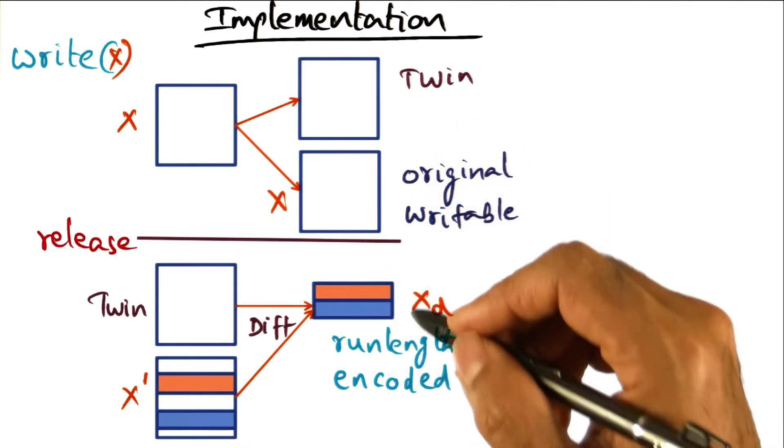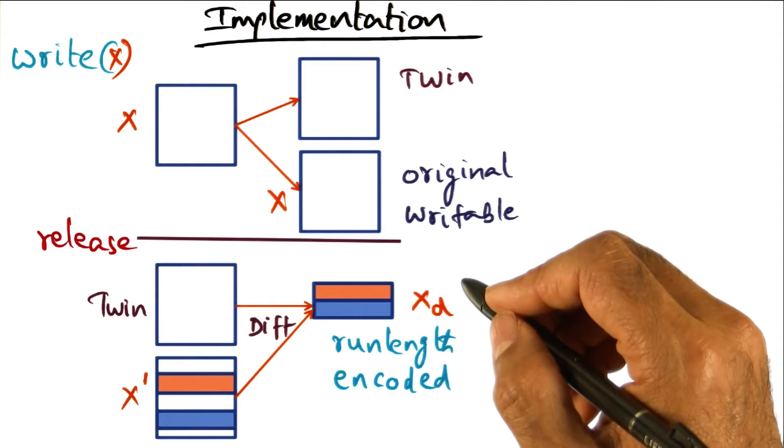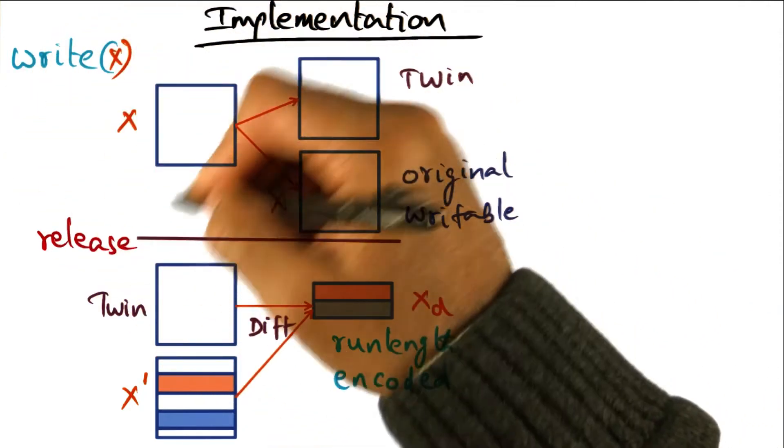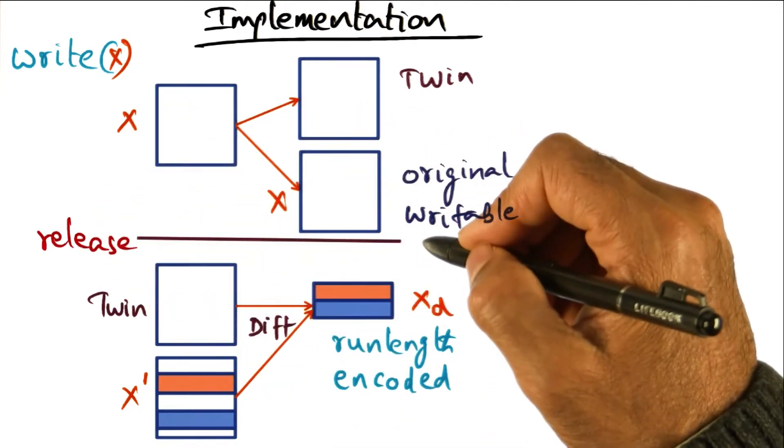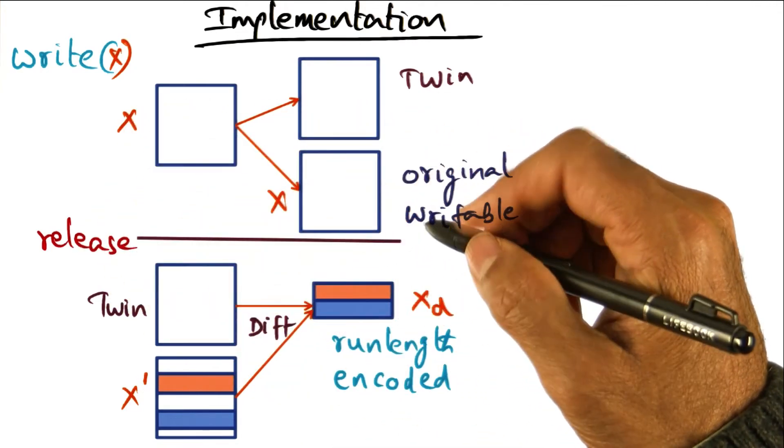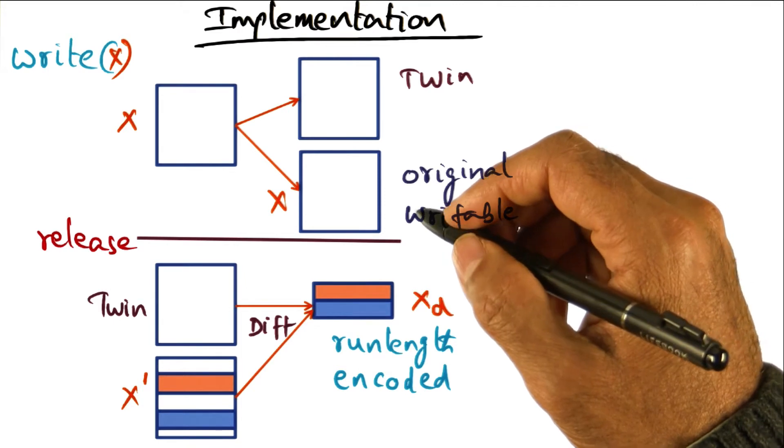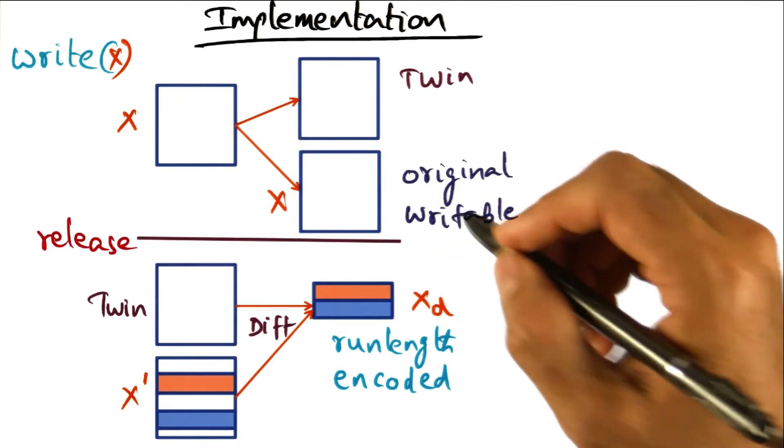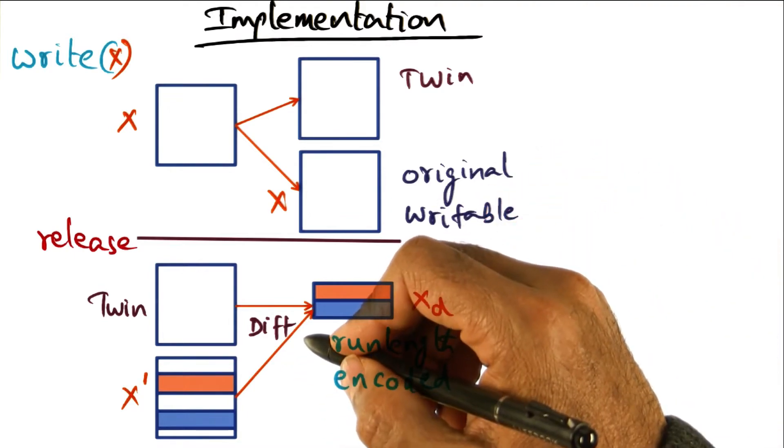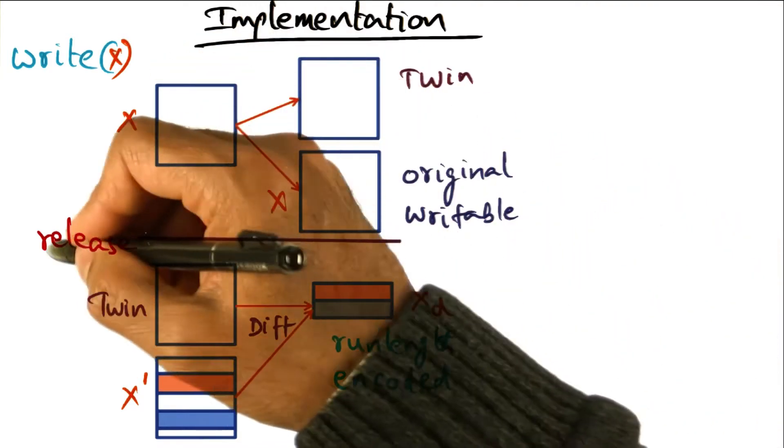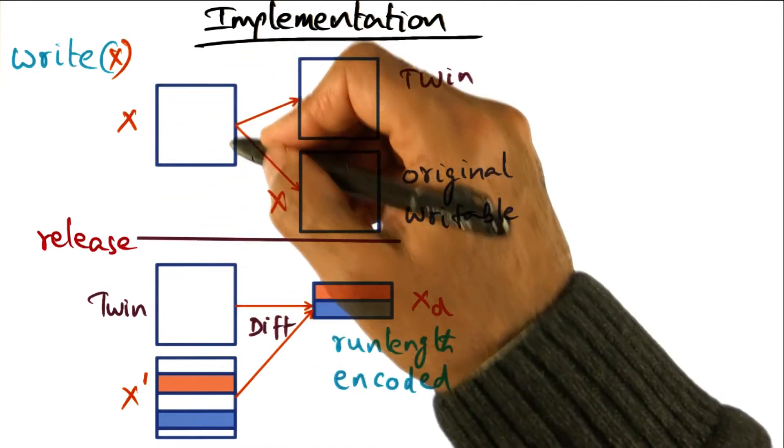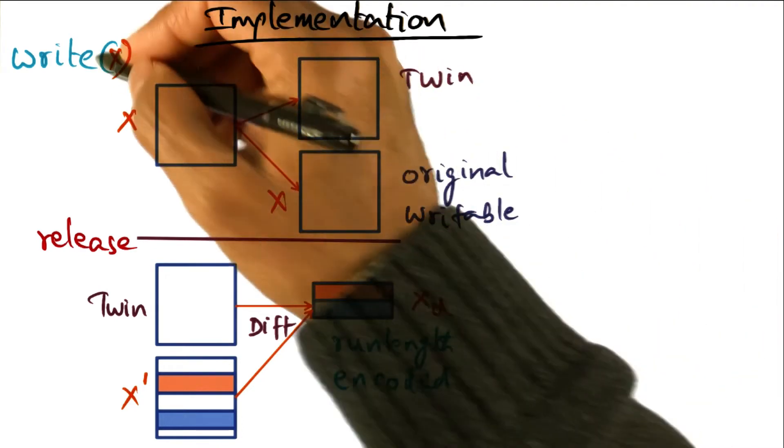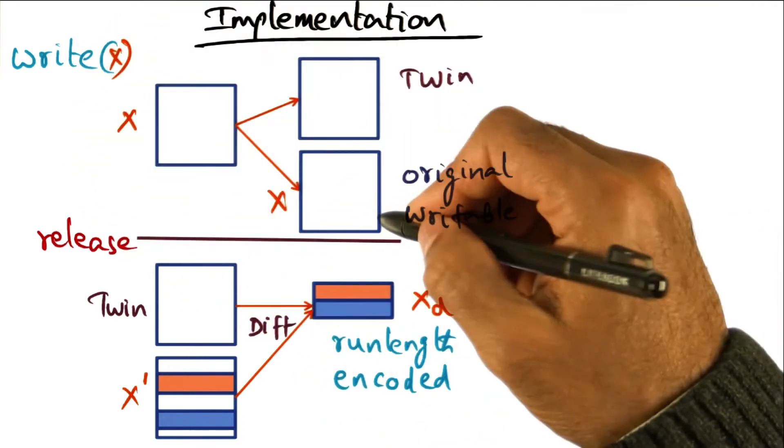As you may have imagined already, when the same lock that governs accesses to this page, which was released over here, is acquired by a different processor, at the point of acquisition, what we're going to do is we're going to invalidate all the pages that were touched in this critical section, including X. So X will be invalidated at the point of acquisition of the same lock that is governing this critical section.